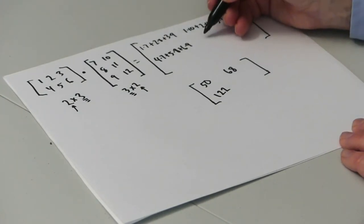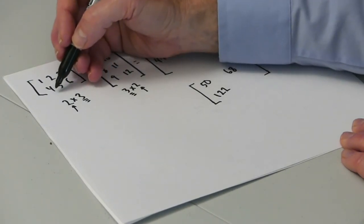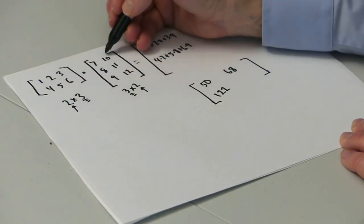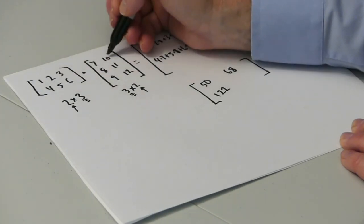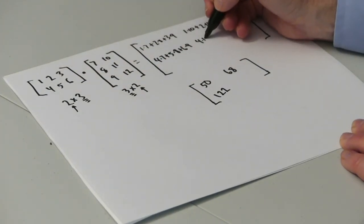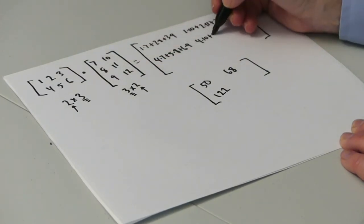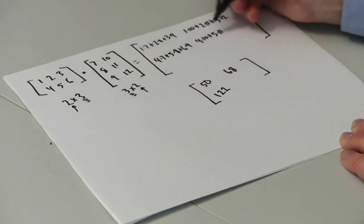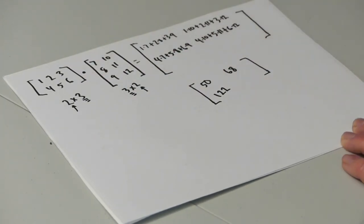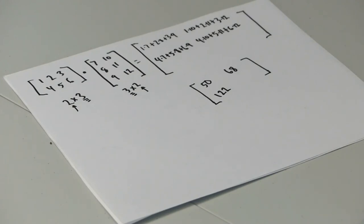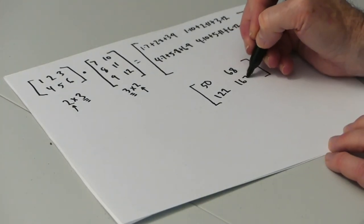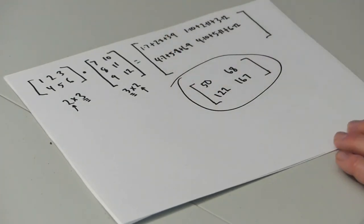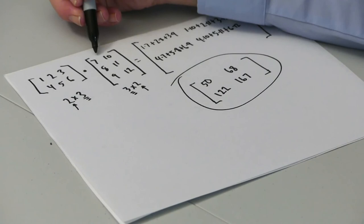Our last entry in the result, row 2 column 2, is the dot product of row 2 and column 2 in the first and second matrices. That's 4 times 10 plus 5 times 11 plus 6 times 12. 40 plus 55 plus 72 adds up to 167. And that's the result of multiplying this matrix times that matrix.